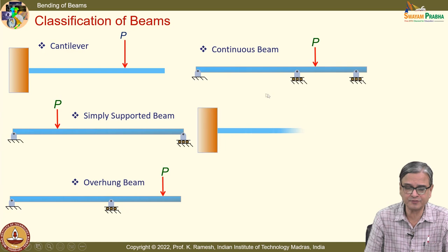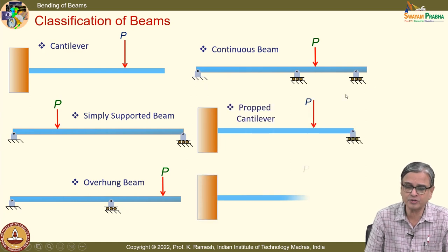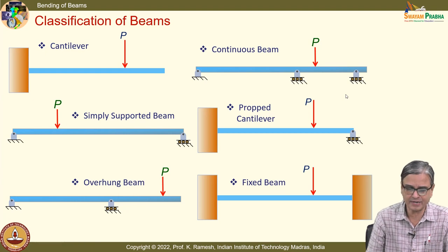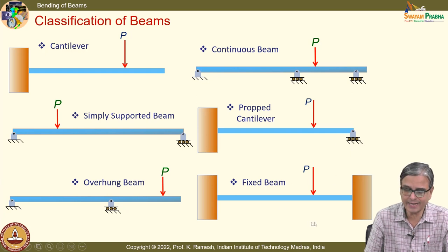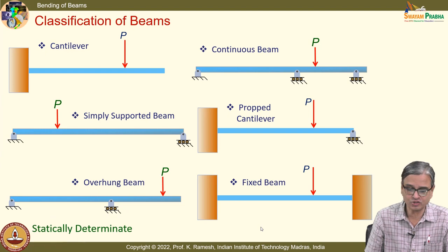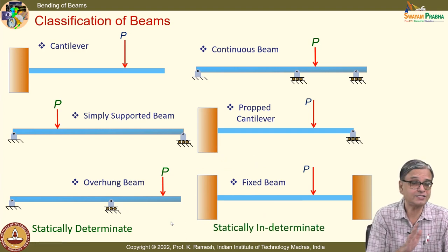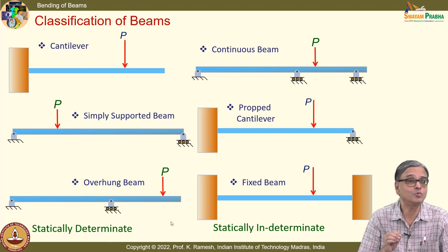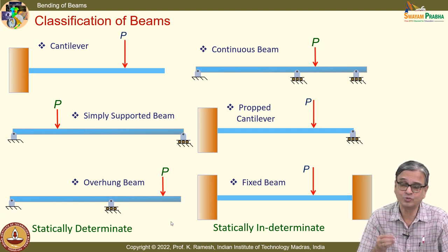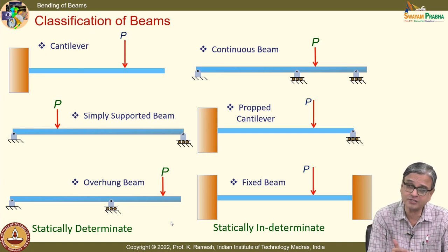There are also other classes of beams. If you take a railroad, it is continuously supported on the entire length, so it is a little more complicated to analyze. You also come across propped cantilever and fixed beams. These are not possible for you to find the forces using the equations of statics — you call these as statically indeterminate. You have to bring in deformation to get additional equations, and with that, evaluate the shear force and bending moment.